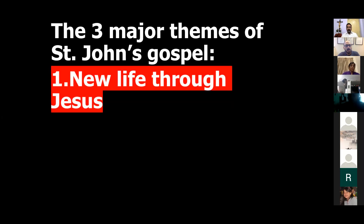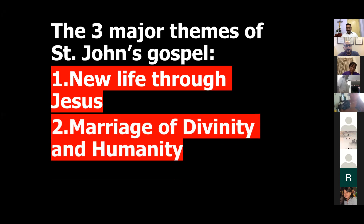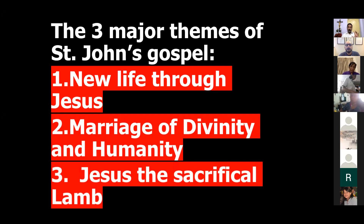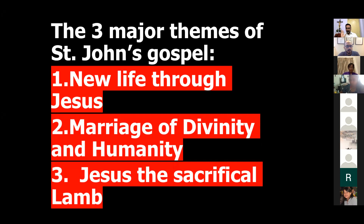John's Gospel has three major themes. Number one is a new life through Christ — constantly, John gives us a message about new life through Jesus Christ. The second major theme is the marriage of divinity and humanity. And the third one is Jesus the sacrificial lamb. These three things he constantly tries to connect in almost everything that he says.